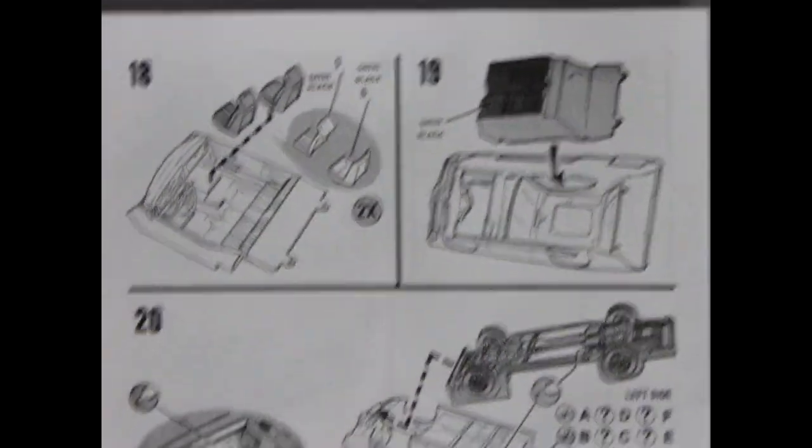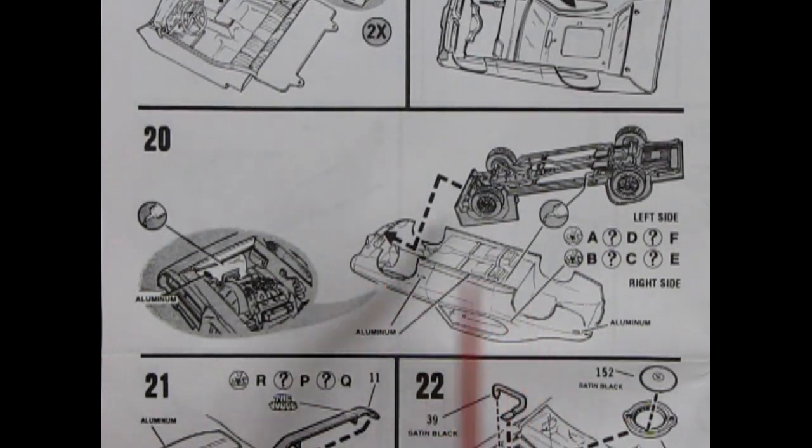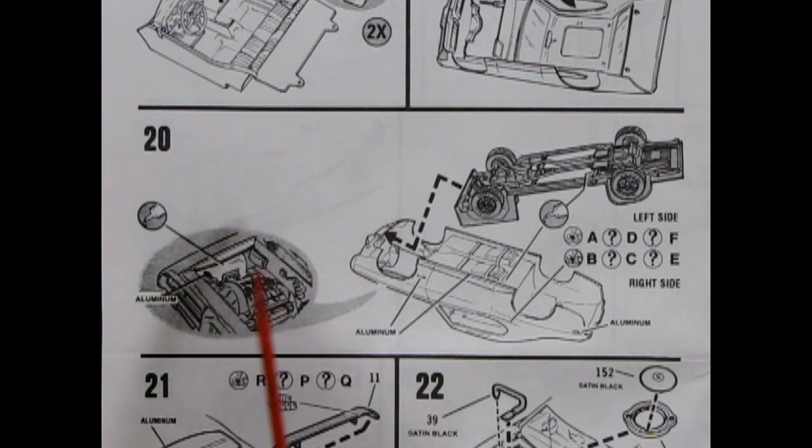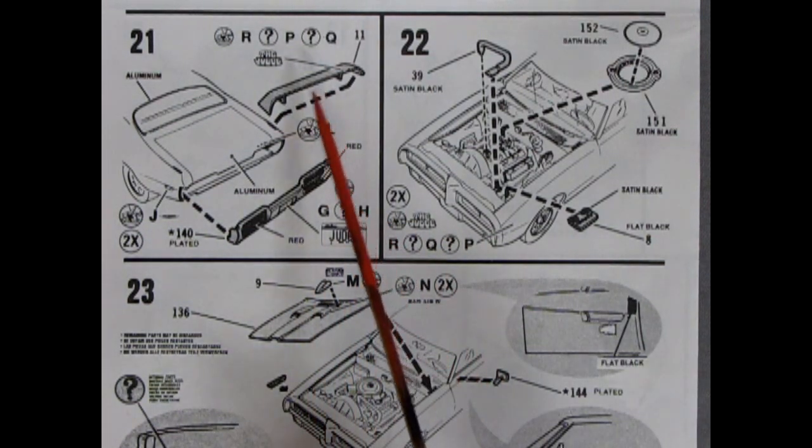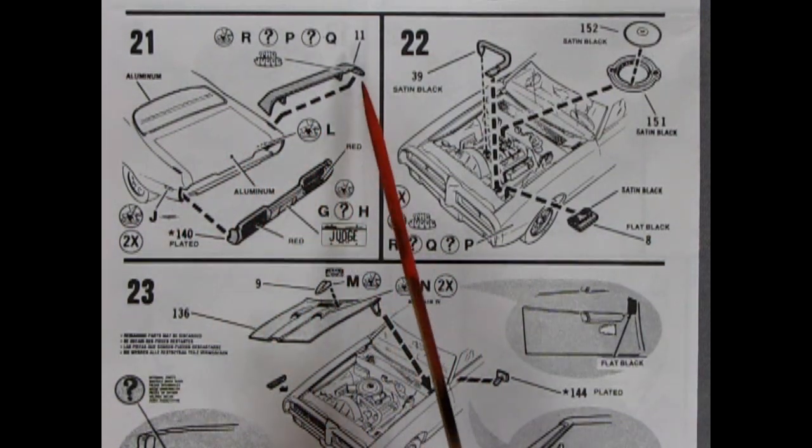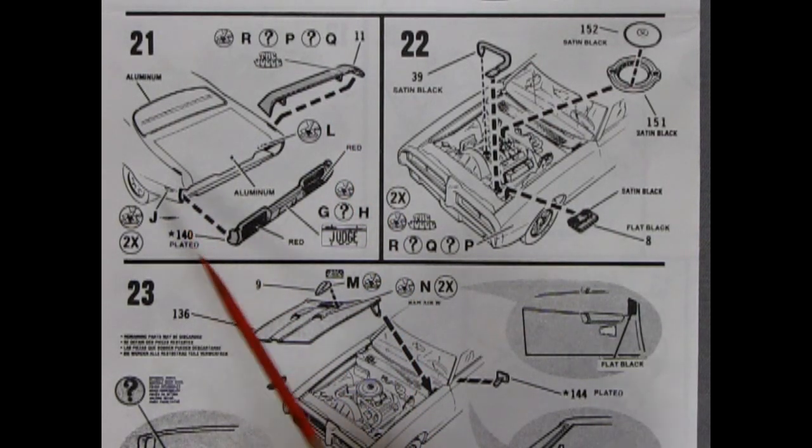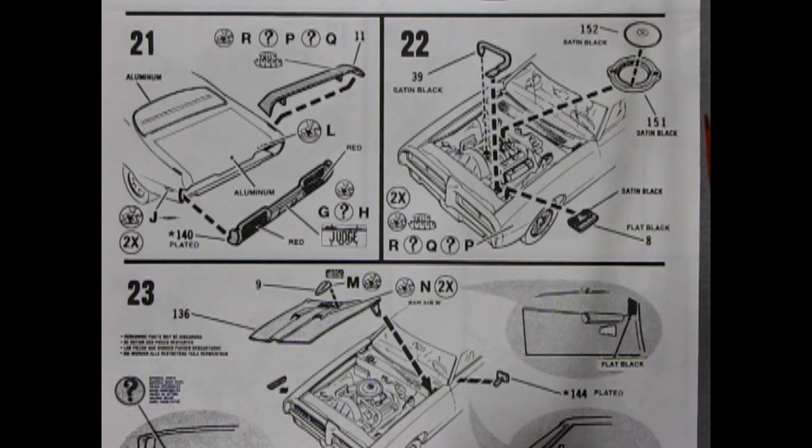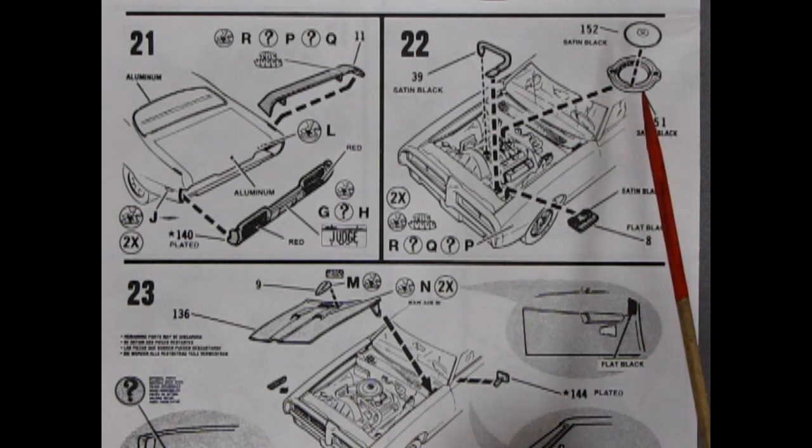Panels 18 and 19 show the completion of the interior bucket with our two bucket seats which have a front and a back which glue in, and then our interior bucket pops under into the car here and you paint the underneath of it satin black. For panels 20 it shows the chassis being popped in underneath the body and it shows you where to glue the tops of the fender wells which is up and under here into our engine bay.